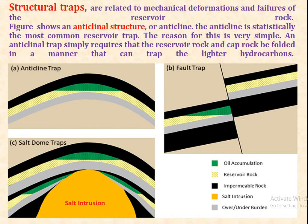The second type is the structural trap, which is related to the mechanical deformation and failure of reservoir rock. The anticline is statistically the most common reservoir trap. An anticline trap simply requires that a permeable reservoir rock and cap rock be folded in a manner that traps the lighter hydrocarbons. Structural traps also include the fault trap and the salt dome trap, in which the inclusion of salt creates oil traps.